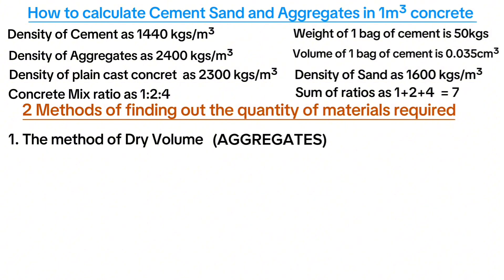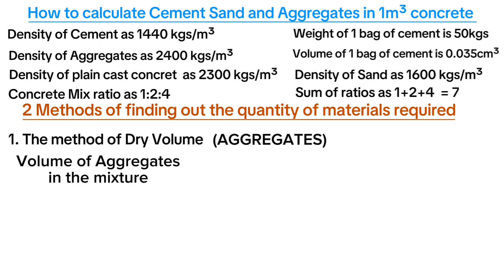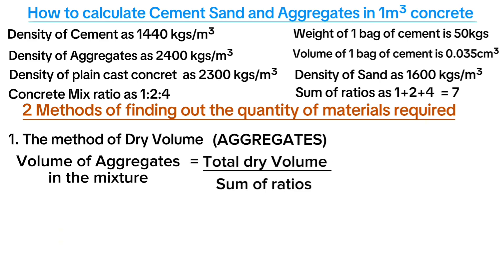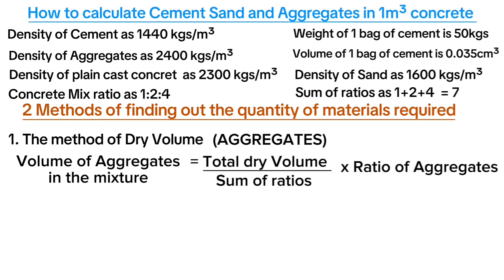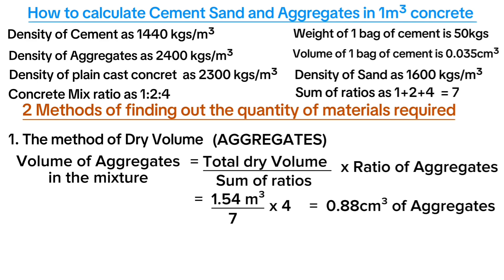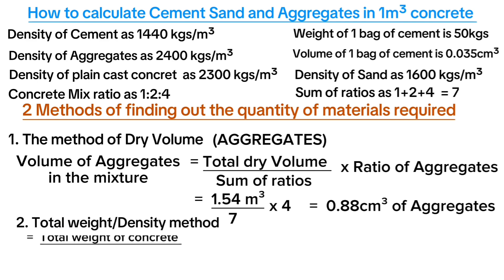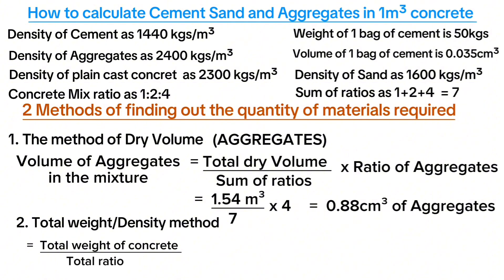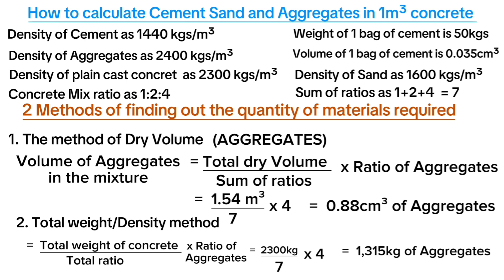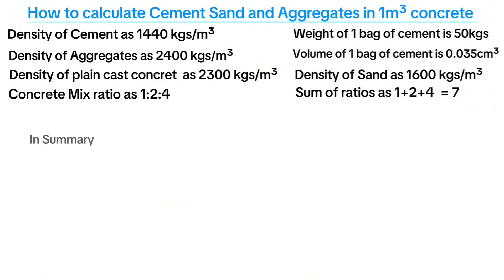To find the quantity of aggregates, we follow the same procedures. Volume of aggregates equals total dry volume divided by sum of ratios, multiplied by the aggregate ratio: 1.54 ÷ 7 × 4 = 0.88 cubic meters. Alternatively, 2,300 ÷ 7 × 4 = 1,315 kilograms of aggregates, which is the same as 1.315 tons.